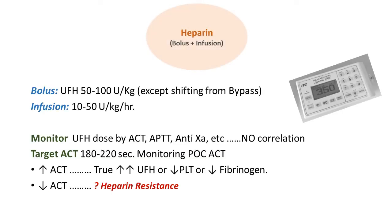Heparin is given as a bolus of 50 to 100 units per kg, except if the patient was shifted from bypass and already received a bolus during open cardiac surgery. Infusion in the unit runs at 10 to 50 units per kg per hour, and we mostly start at 20 units per kg per hour. We then follow and monitor this heparin dosing.